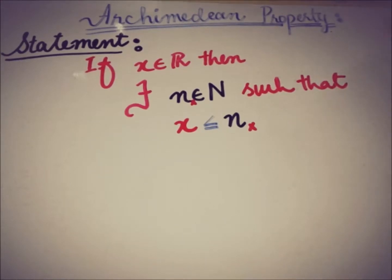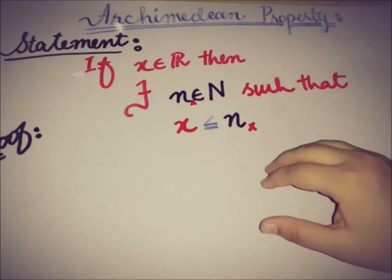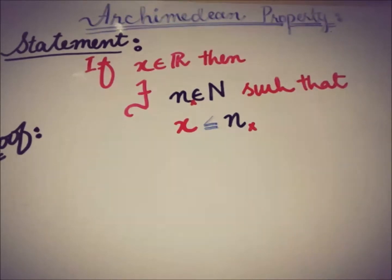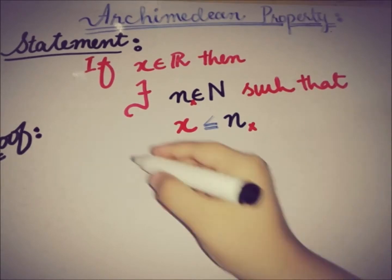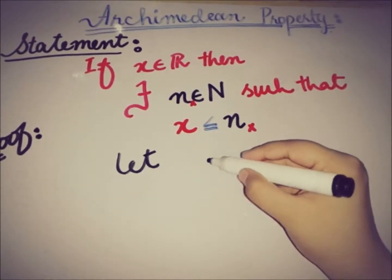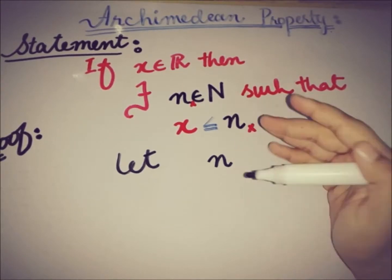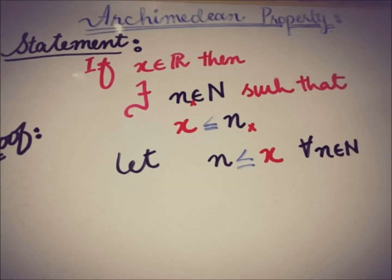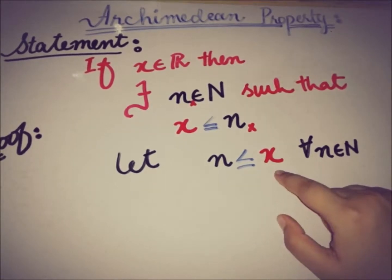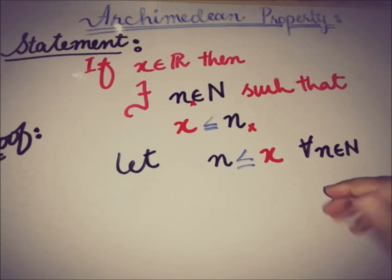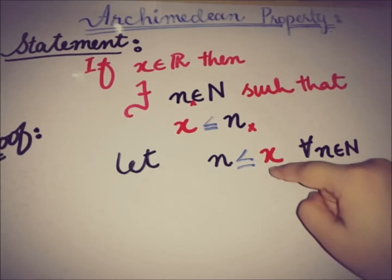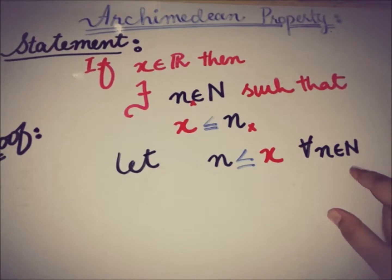Let's start the proof. We will do this proof by contradiction — we will assume this assertion is false and then see what is the outcome. So let's assume that every natural number n is less than this x. If x is greater than or equal to every possible natural number, then x is the upper bound of the set of natural numbers N.